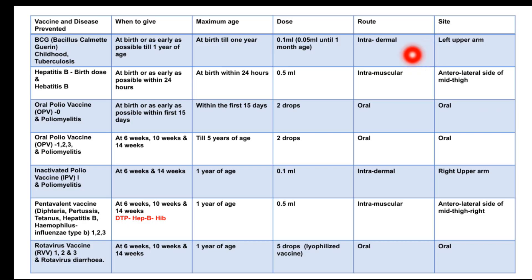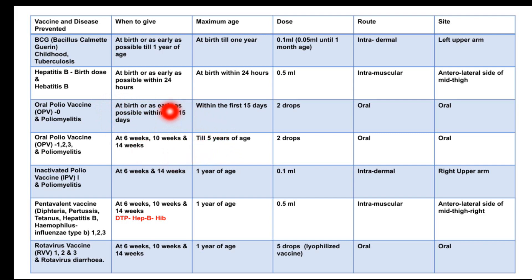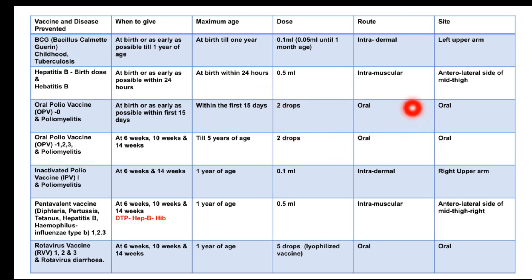The third vaccine is the Oral Polio Vaccine, OPV-0, the birth dose, which protects against poliomyelitis. It is given at birth or as early as possible within the first 15 days. The dose is 2 drops through the oral route. After the birth dose, OPV booster doses 1, 2, and 3 are given at the 6th, 10th, and 14th week.